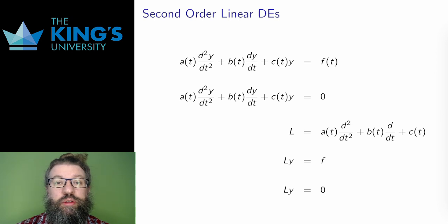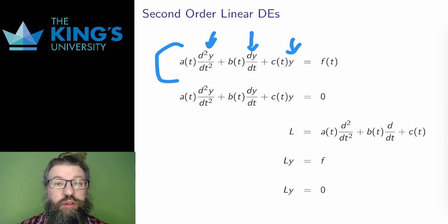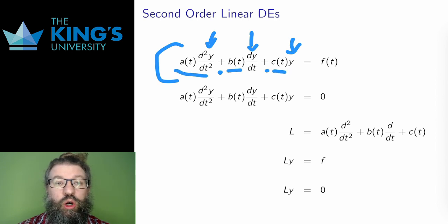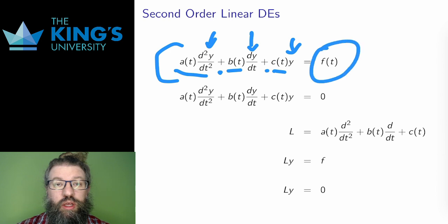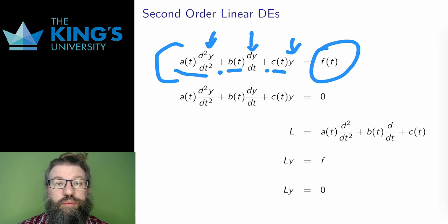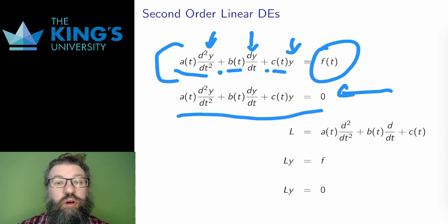A second-order linear differential equation has this form. Since this is second-order, there is a second derivative, as well as the first derivative and the function itself. Since this is a linear equation, all the terms are added up with coefficients. The coefficients can be other functions of t, the independent variable. There is also a function f of t on the right, and this is the only expression where the function y doesn't show up. If the right side is zero, like with first-order linear equations, then the equation is called homogeneous.